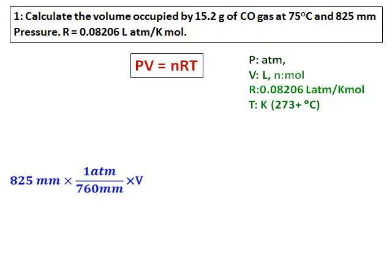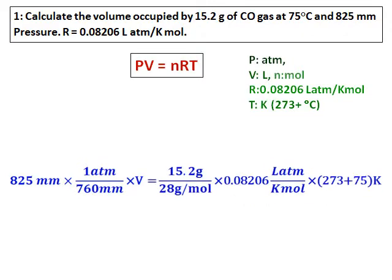So the first step is, I will convert the 825 mm to atmosphere by dividing it by 760. And then volume we have to calculate. And the number of moles is not given but the mass is given, 15.2 grams divided by the molar mass of carbon monoxide. The value of R is given, and the temperature converted into kelvin. And I calculate the volume. And the unit of volume will be in liters.